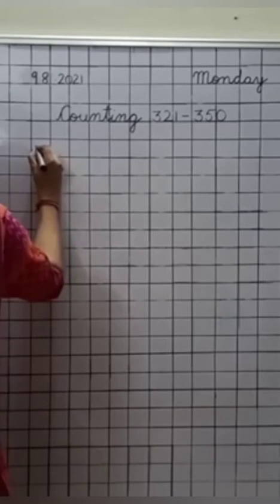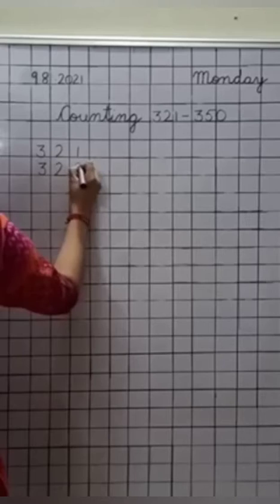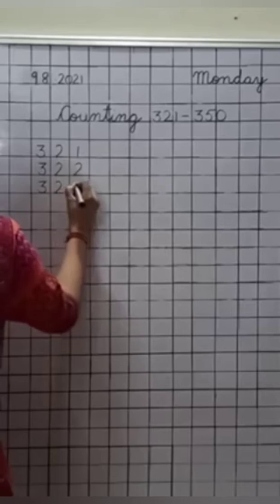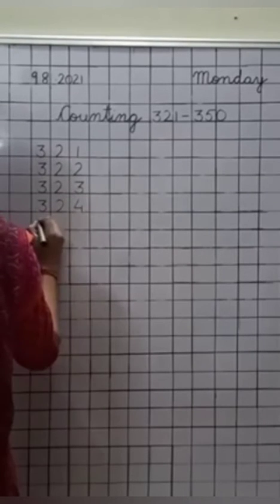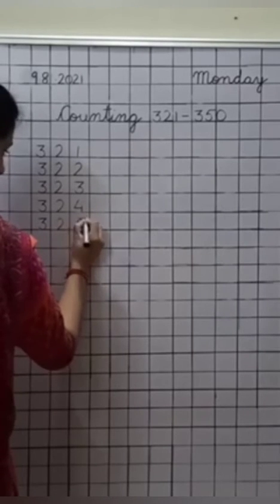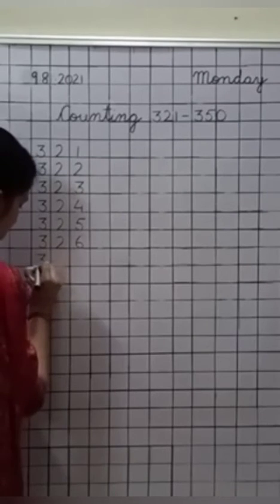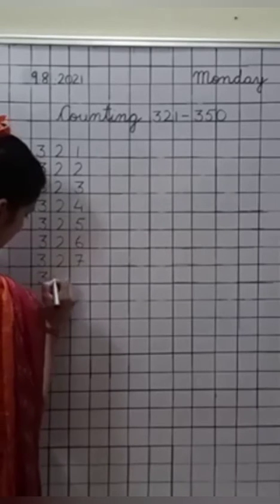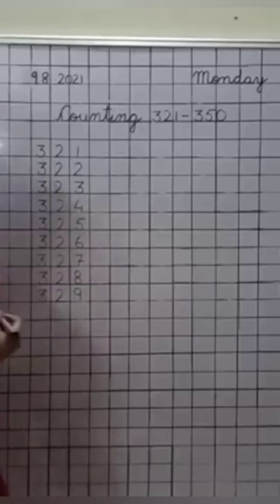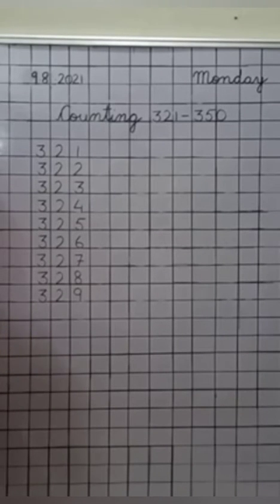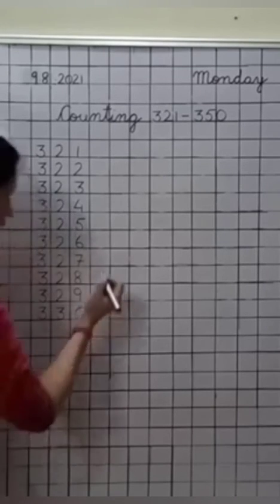Let us start. Three hundred twenty-one, three hundred twenty-two, three hundred twenty-three, three hundred twenty-four, three hundred twenty-five, three hundred twenty-six, three hundred twenty-seven, three hundred twenty-eight, three hundred twenty-nine. What comes after 29? 30. Very good. Write down here: three hundred thirty. Now leave this line.